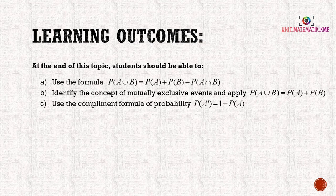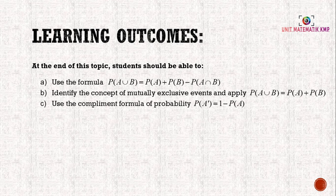Learning outcomes. At the end of this topic, you should be able to: (A) use the formula P(A union B) = P(A) + P(B) - P(A intersect B); (B) identify the concept of mutually exclusive events and apply P(A union B) = P(A) + P(B); and (C) use the complement formula P(A complement) = 1 - P(A).